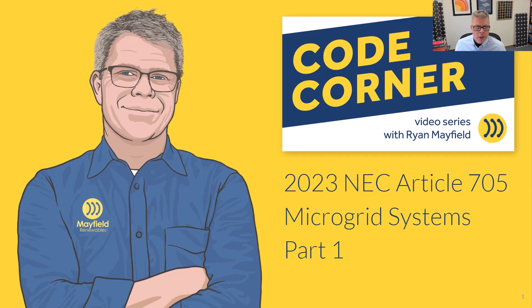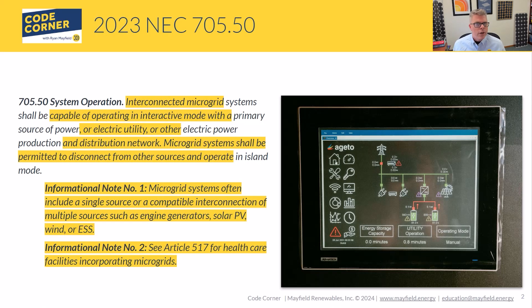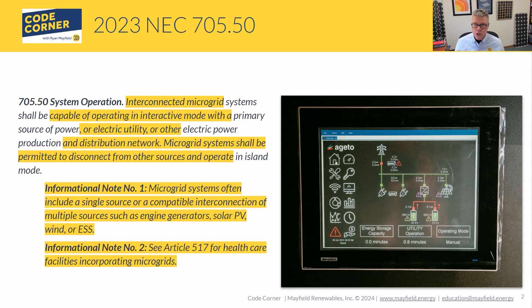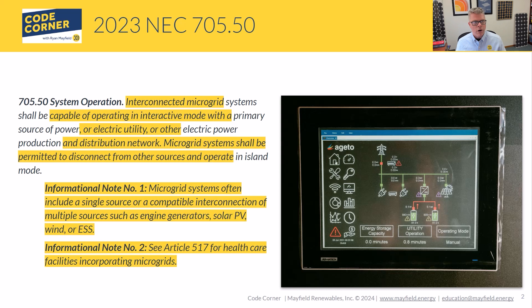One of the things that's probably super helpful when talking about microgrids is to define what a microgrid is. You'll find a definition in Article 100, which talks about a microgrid being an electric power system capable of operating in island mode and capable of being interconnected to an electric power production and distribution network. In short, in the eyes of the NEC, we have power production sources and a primary source of power.